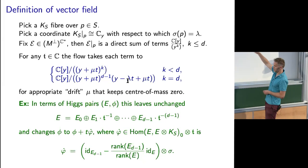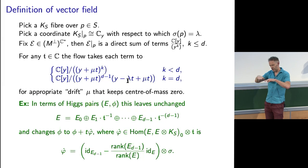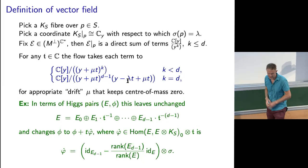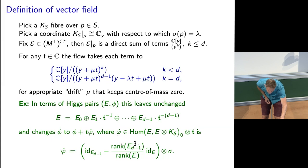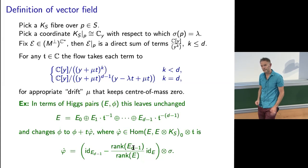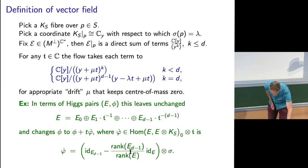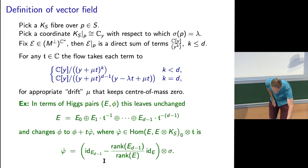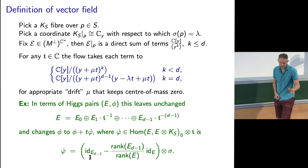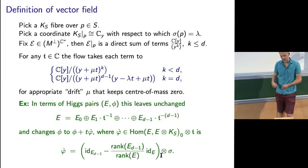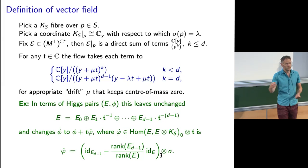In terms of this weight space decomposition — how the sheaf looks at various orders of thickening — all we're doing is the following. This right-hand term here is the drift, the mu, which just keeps the trace equal to zero. The important piece is zero on every weight space except the last one, where it's just sigma times the identity. So I'm just increasing the Higgs field by sigma on that last piece, and that's what sends us upward.